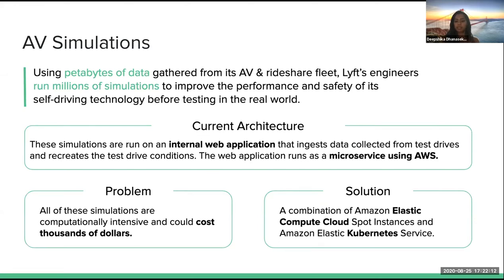Because Lyft engineers are constantly working with such large data sets to build these different models and maps, it's super computationally and financially expensive to test the technology each time physically in the car. Instead, engineers developed an in-house internal simulation engine to run virtual test drives, helping with continuous integration and deployment. This simulation engine is built as a microservice using Amazon Web Services EC2, or Elastic Compute Cloud. However, the total data processed per week with all simulations being run was on the level of petabytes, so Lyft needed to be very careful about which EC2 instances it was using in order to save money.